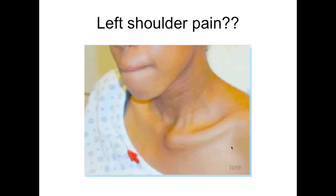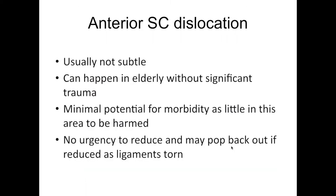Just a variation on this: this patient has left shoulder pain. If I didn't tell you which side, you might say the problem's on the right because you can't see the clavicle very well on the right. But here the clavicle is much more prominent on the left side, and he's tender immediately over it. So this is likely an anterior sternoclavicular dislocation — this is the more common version and is not an emergency; nothing's at risk. Think about it when you see a much more prominent clavicle on the side of injury.